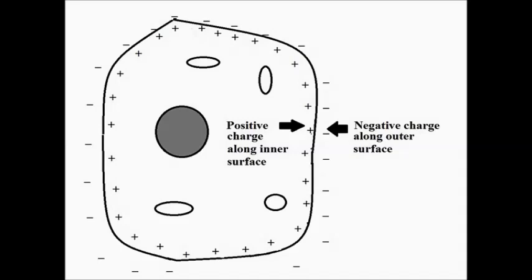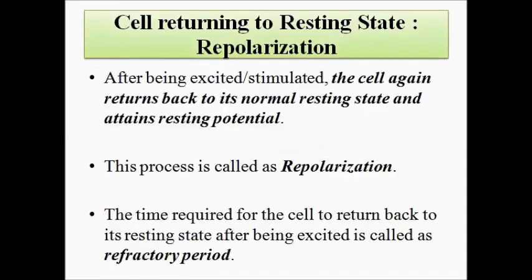When the stimulus is removed, the cell falls back to its normal resting state and attains the resting potential — this process is called repolarization. The time between the excited state and returning back to the resting state is called the refractory period: the time interval between depolarization and repolarization.